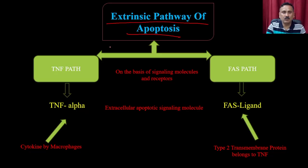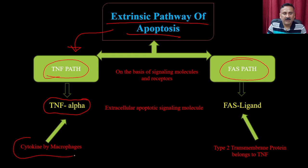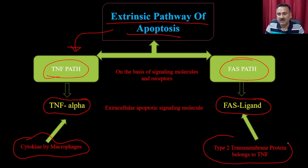Then we have the extrinsic pathway, which can be of two types: the TNF pathway or the FAS pathway. The TNF pathway is activated by TNF-alpha secreted by macrophages and other immune cells, whereas the FAS pathway is activated by the FAS ligand present on some immune cells.